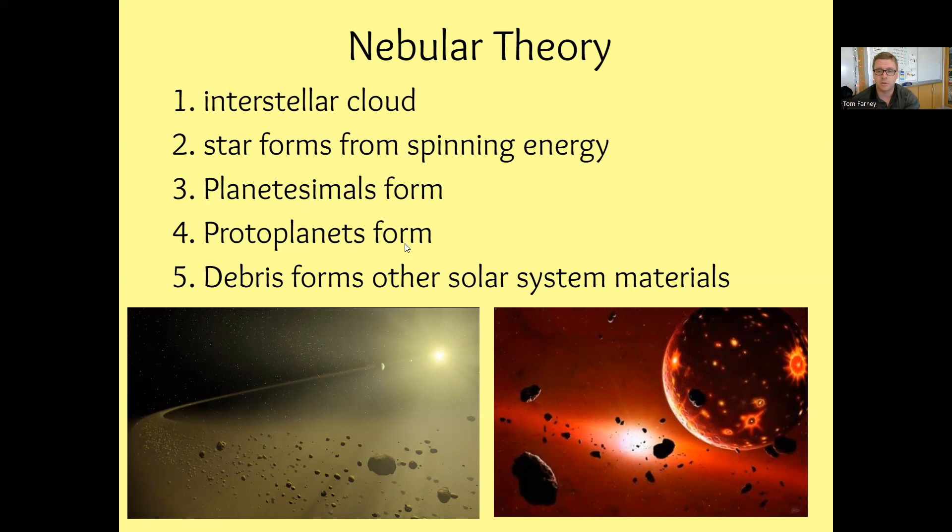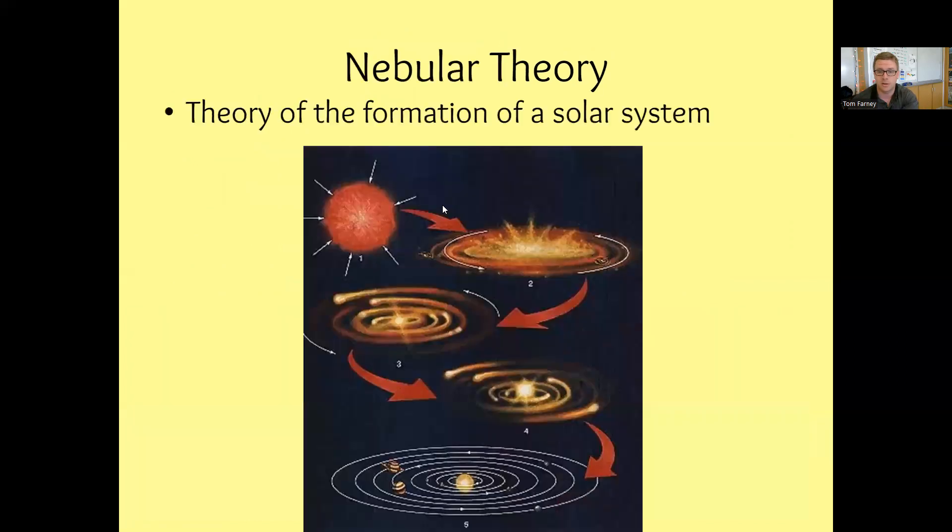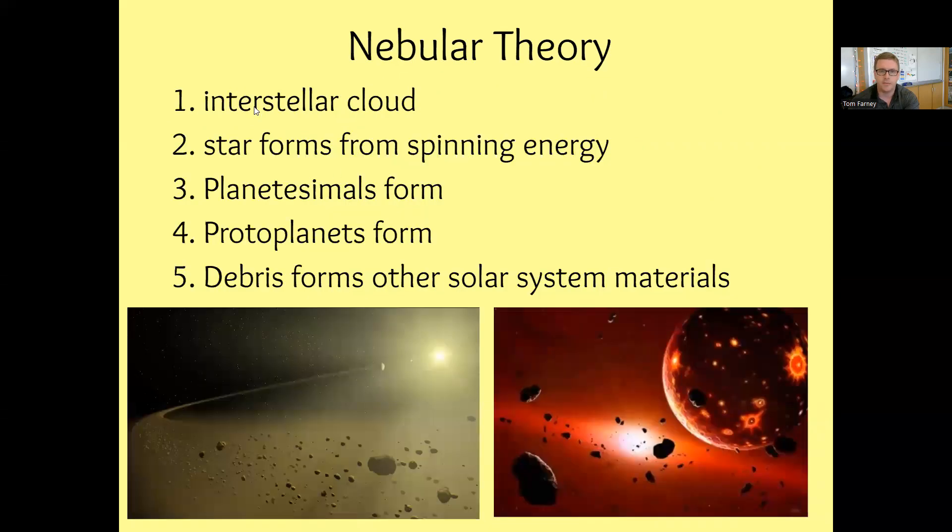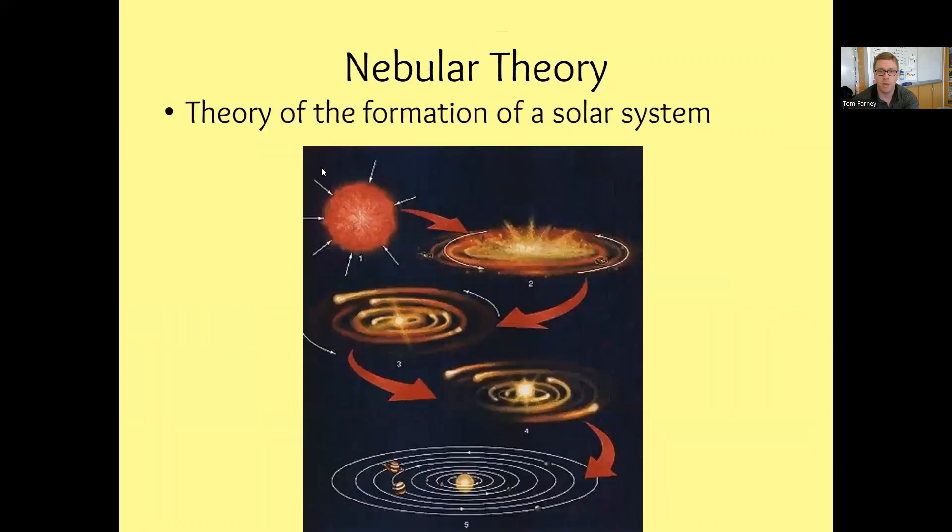Then once enough material coalesces, it combines together, we can call them protoplanets. And then the last step, debris from other solar system materials begin to take the shape of moons and stuff like that around our planets here. So we have five steps, one, two, three, four, five on this slide, and then the five steps here, one, two, three, four, five that kind of go on with it.